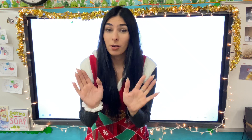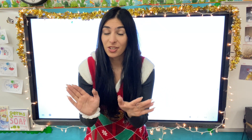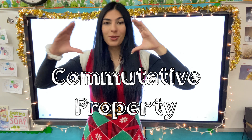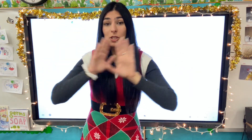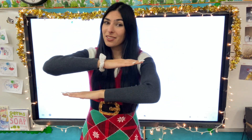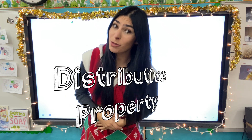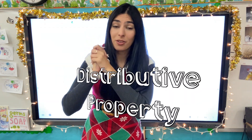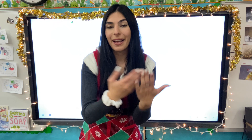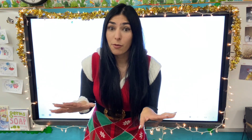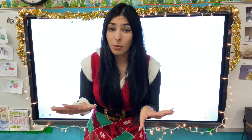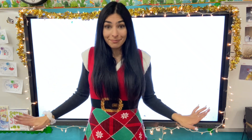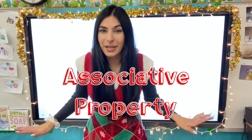Now you might be thinking, Miss B, we just learned about some sort of property. There are a couple of different properties with multiplication. We have the commutative property, where the two factors can switch places and the product will still be the same. We have distributive property, which is when you have a big number, you split it up into smaller numbers and share the multiplication — that one's really tough. If you're having trouble, check out my video on distributive property. But today we're going over associative property.